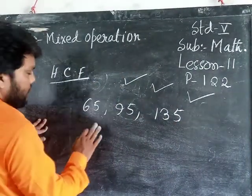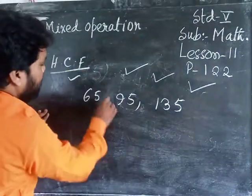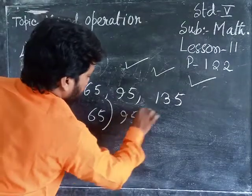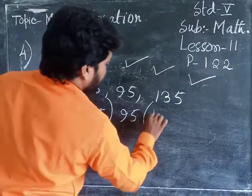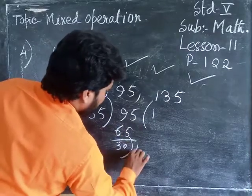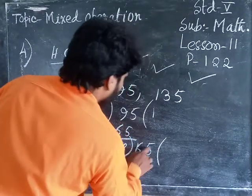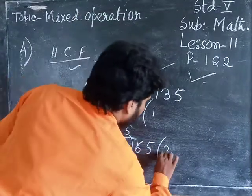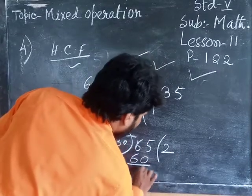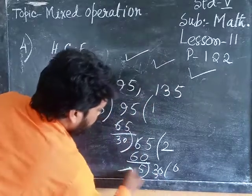So generally, you solve the problem HCF by division method. It is very easy. So 65, 95, you get to divisible by 5: 65, 1, 65, 50. Next, 65 will function as division, 32, 30, 2, 65, 30. So this is the highest common factor.